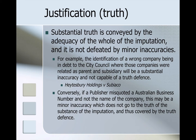Substantial truth is conveyed by the adequacy of the whole of the imputation and is not defeated by minor inaccuracy. For example, the identification of a wrong company being in debt to the City Council — where those companies were related as parent and subsidiary — will be a substantial inaccuracy and not capable of relying on the truth defence. This comes from the case of Hatesbury Holdings and Subiaco. Conversely, if a publisher misquoted an Australian business number but not the name of the company, this may be considered a minor inaccuracy which does not go to the truth of the substance of the imputation and would thus be covered by the truth defence.